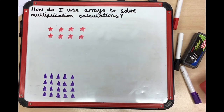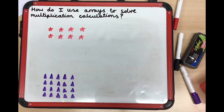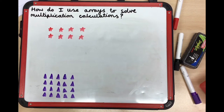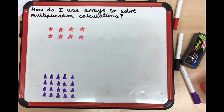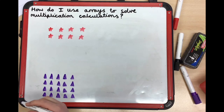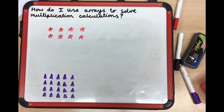How do I use arrays to solve multiplication calculations? Have a look at this array of red stars. What might it be? What might it show?